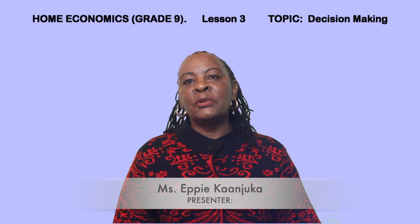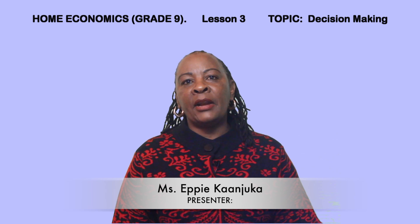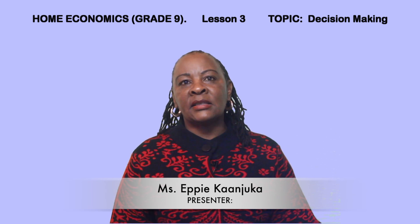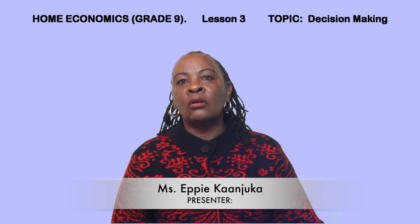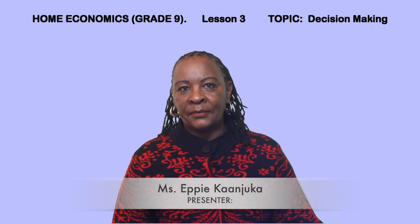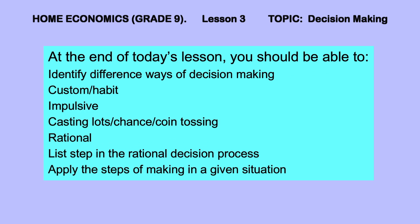Good day viewers, welcome to our third lesson for Grade 9 Home Economics learners and interested viewers. My name is Epi Kanyuka. Today we are going to talk about decision making. At the end of today's lesson you should be able to identify different ways of decision making, which are custom or habit, impulsive, casting lots or chance or coin tossing, and rational.